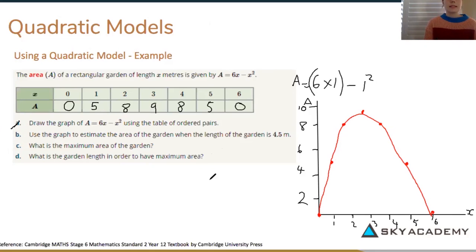B says use the graph to estimate the area of the garden when the length of the garden is 4.5. So if we have a look, 4.5 for the length which is x, so 4.5 would be around here. When you go up and then across it should give us a value of about 7. So 7 for B, 7 meters squared because it's area.